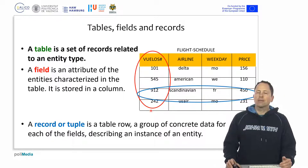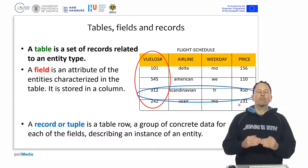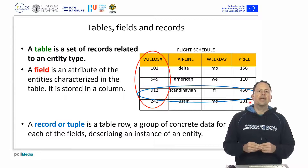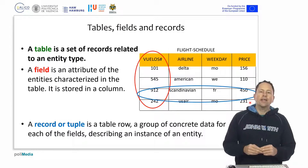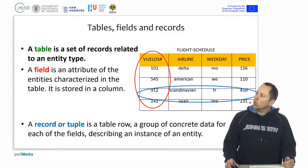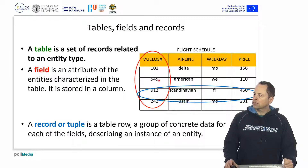A record, also called a tuple, is a row — a row that contains the specific data for a specific entity. For example, my car is blue, it has a certain cylinder capacity. It is specific data in each of these fields for a specific entity. That's a record.